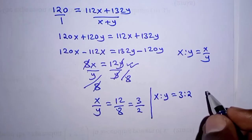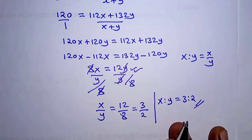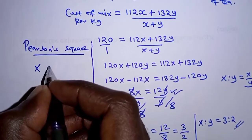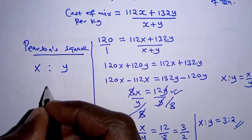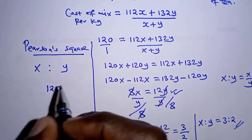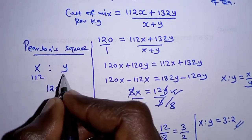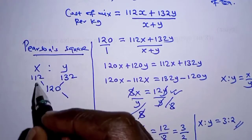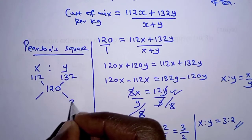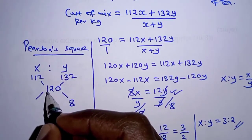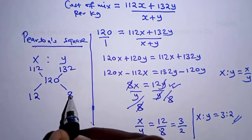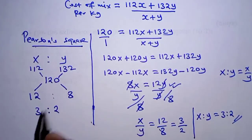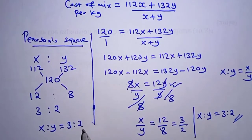We can also apply the Pearson square method. Place the two masses x and y, and put the cost of the mixture per kilogram — 120 — in the middle. The cost of type x was 112 shillings and type y was 132 shillings. Taking diagonal differences: 132 minus 120 equals 12, and 120 minus 112 equals 8, giving a ratio of 12 to 8, which simplifies to 3 to 2. So x to y equals 3 to 2.